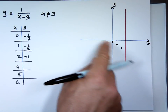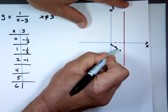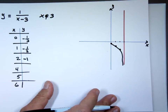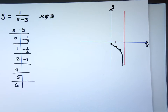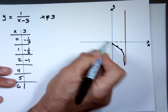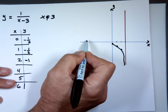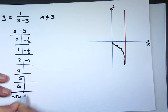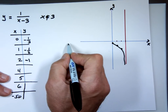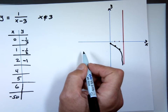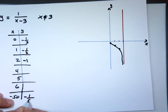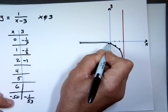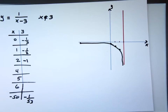When x is 1 that's negative 1 half. When x is 2 that's negative 1. You can't touch the line at x equals 3, so the graph continues going down toward it. I'll also try x equals negative 50 to check — that gives negative 1 over 53, which is very close to zero. The left side never goes above the x-axis and never touches that vertical line.